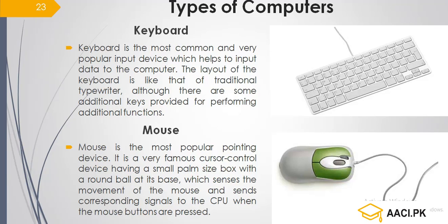The second input device is the mouse. The mouse is the most popular pointing device. With the help of this, we work on a click-by-click basis. It has two buttons and a cursor, and we move the arrow or pointer. It is a small-sized device.